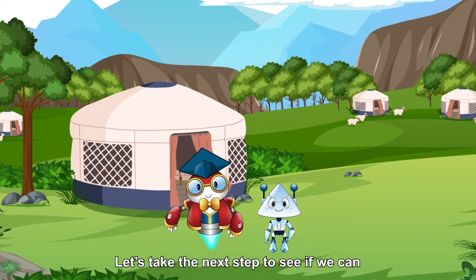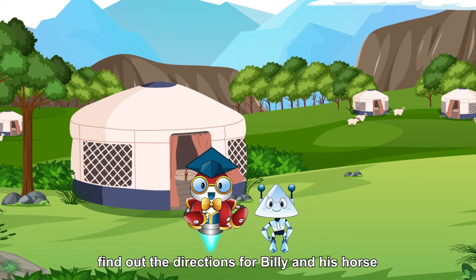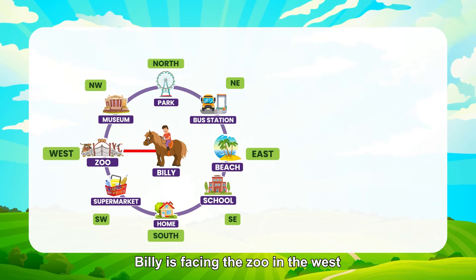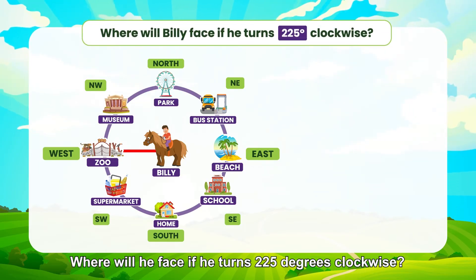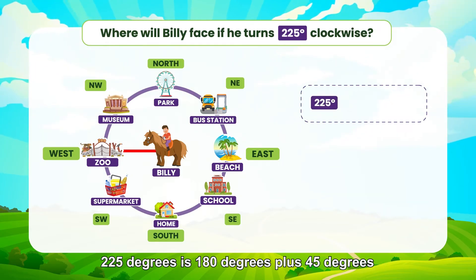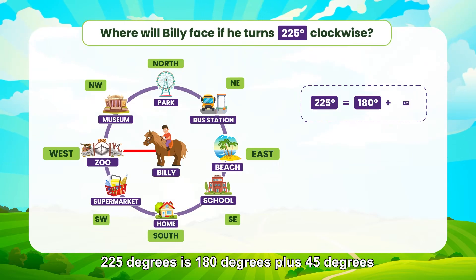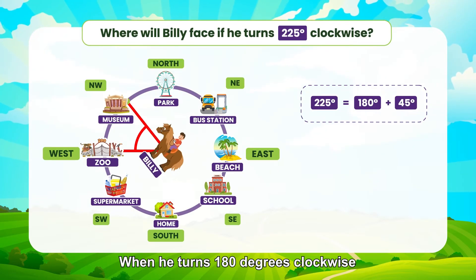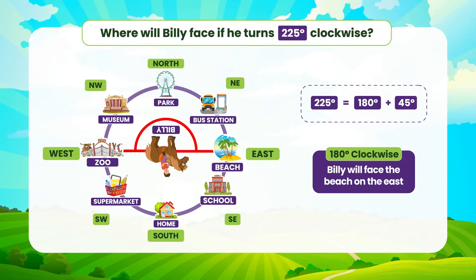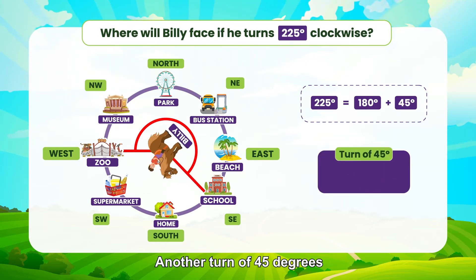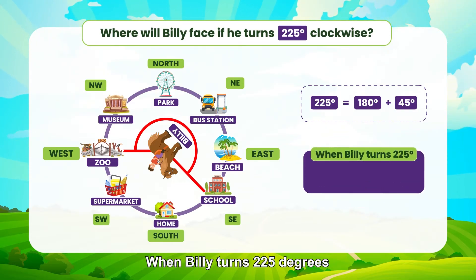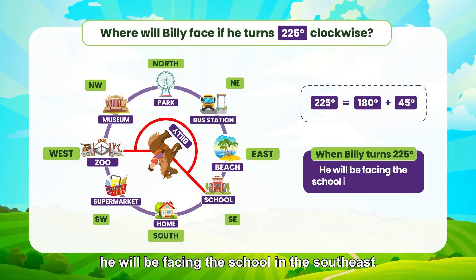Let's take the next step to see if we can find out the directions for Billy and his horse. Billy is facing the zoo in the west. Where will he face if he turns 225 degrees clockwise? 225 degrees is 180 degrees plus 45 degrees. When he turns 180 degrees clockwise, Billy will face the beach on the east. Another turn of 45 degrees and he will be facing the school. When Billy turns 225 degrees, he will be facing the school in the southeast.